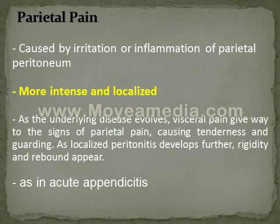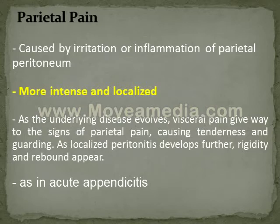Second is parietal pain. It is caused by irritation or inflammation of the parietal peritoneum; it is more intense and localized. Abdominal pain usually begins as visceral pain, then as the disease progresses it becomes more intense and localized due to irritation of the parietal peritoneum. For example, in acute appendicitis, pain begins around the umbilicus, then as the disease progresses and irritation of the parietal peritoneum occurs, parietal pain is felt at the right lower quadrant of the abdomen.